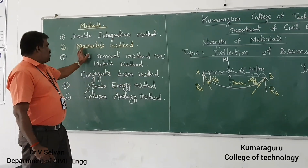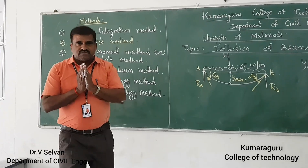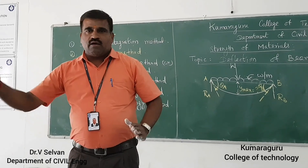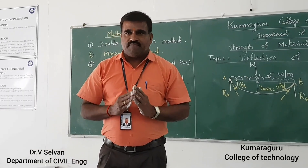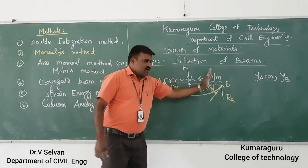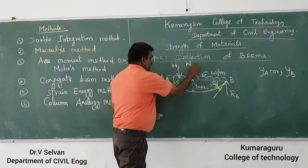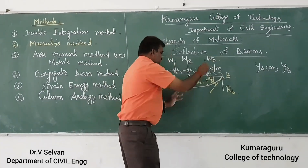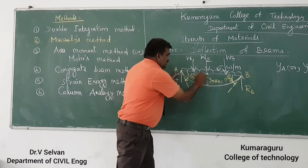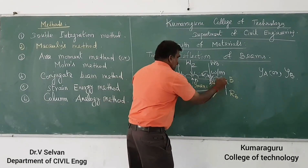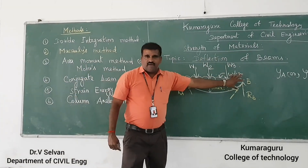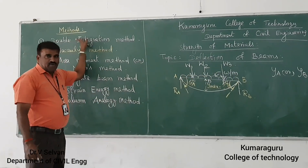The second method is called the Macaulay's method. If the load is discontinuous — say W1, W2, partial UDL, or UDL throughout — you can use the Macaulay's method. So if there are loads W1, W2, W3 in addition to UDL, you divide the beam into regions: A to C, C to D, D to E, and E to B. This is nothing but the extension of the double integration method.